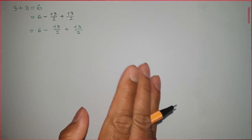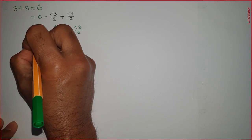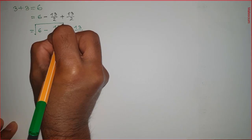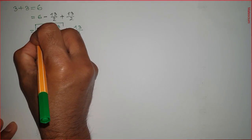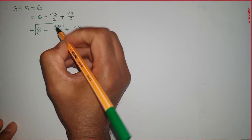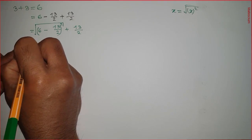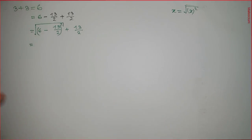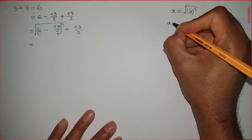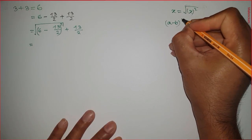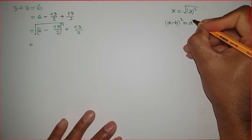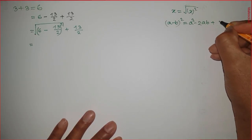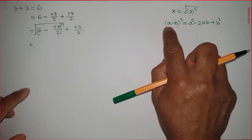Next, I'm introducing another piece of mathematical engineering: I'm introducing a square root on that part, and to keep it equal I have to introduce a square as well on this part. Then I can apply a simple formula — which is (a minus b) whole square — where a minus b whole square equals a squared minus 2ab plus b squared.